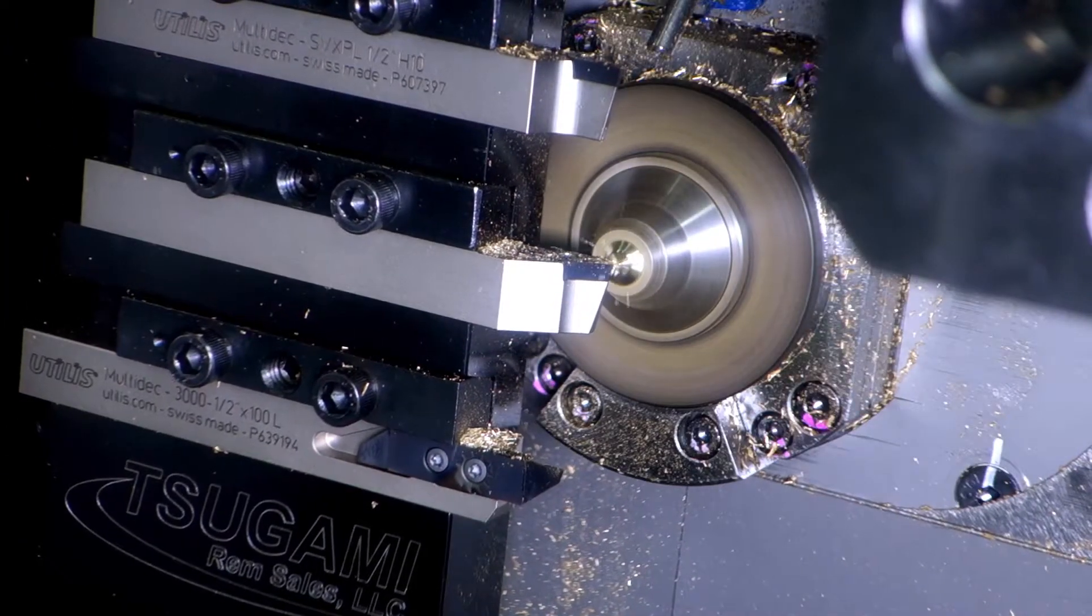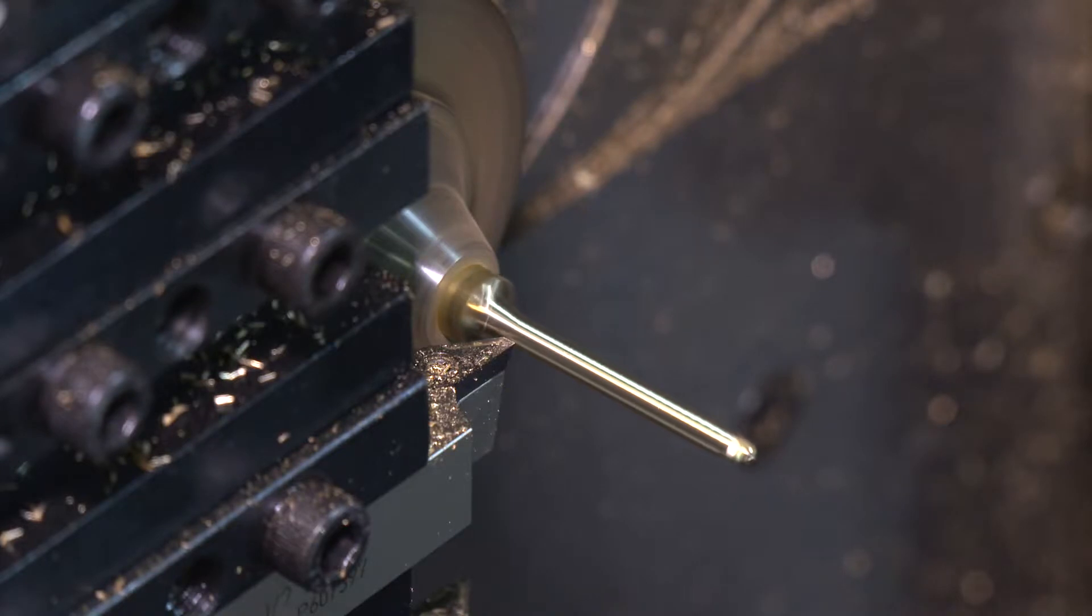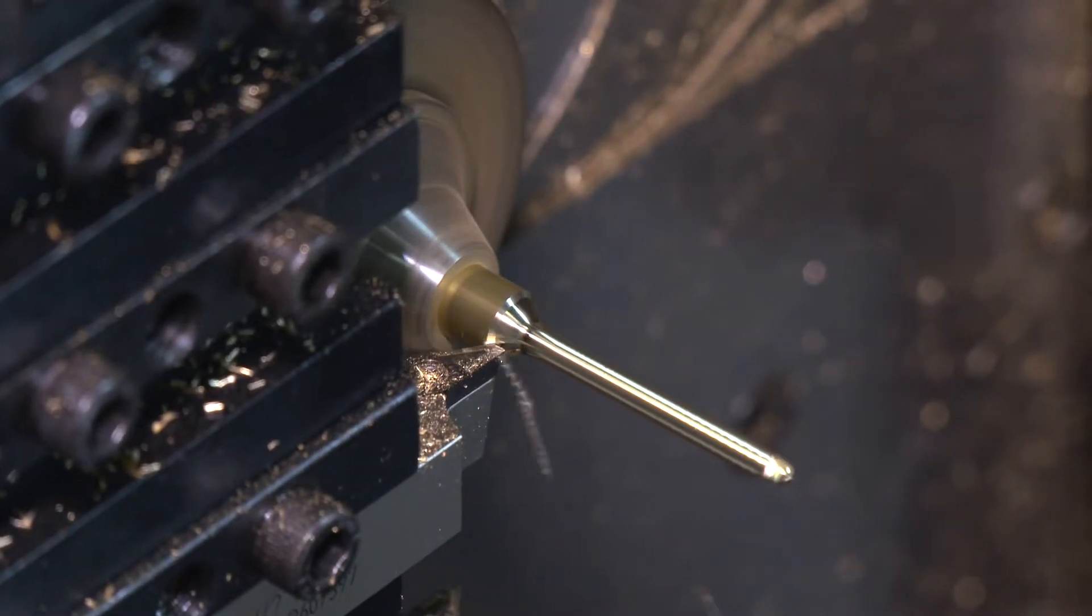So the front side of the tool cuts, and the back side wiper angle actually rubs or burnishes the part to improve the finish. Correct.